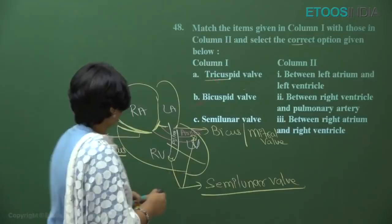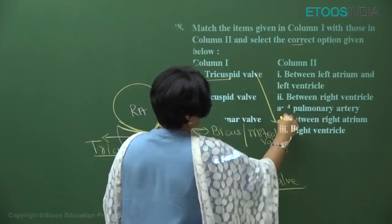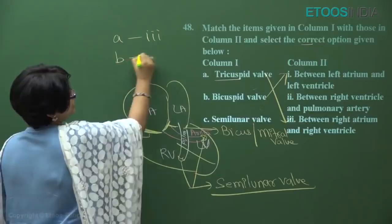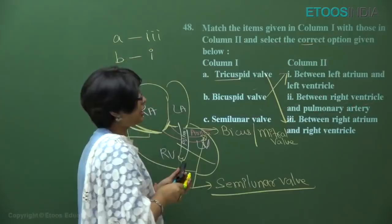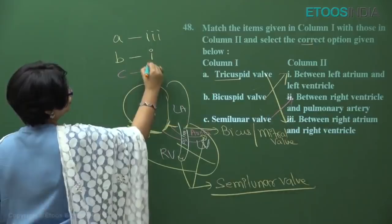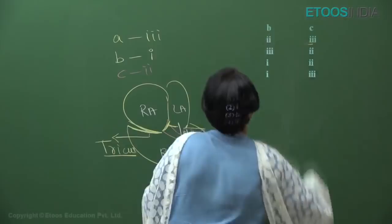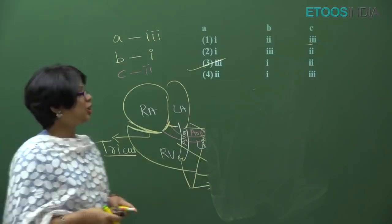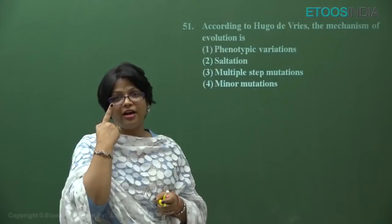So: tricuspid valve is between right atrium and right ventricle — A matches with three. Bicuspid valve is between left atrium and left ventricle — B is one. Semi-lunar valve is between right ventricle and pulmonary artery — C is two. Following our rule — A is three, B is one, C is two — the answer is option number three.